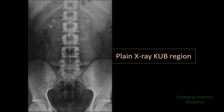On each side of the vertebrae, there are two lateral projections. These are the transverse processes. Here is one transverse process, here is another one. Here are the transverse processes — and here, and here also are the transverse processes.